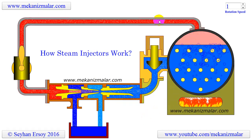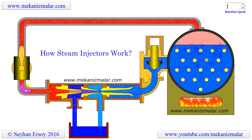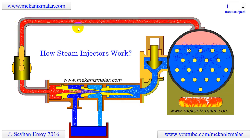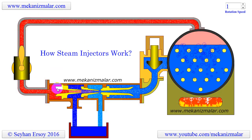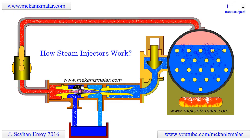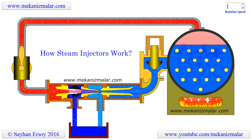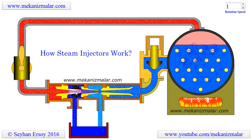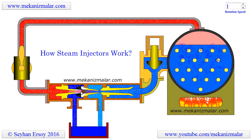Steam is taken from the boiler and delivered to the injector with high pressure and low velocity. This flow is directed to the converging-diverging steam cone. Where the cone is converging, the steam velocity is increased to the speed of sound. At the diverging section, the pressure is further reduced and converted to kinetic energy, where steam is moving faster than the speed of sound. By the time the steam leaves the steam cone, its speed is much faster than the speed of sound but the pressure is below atmospheric pressure.